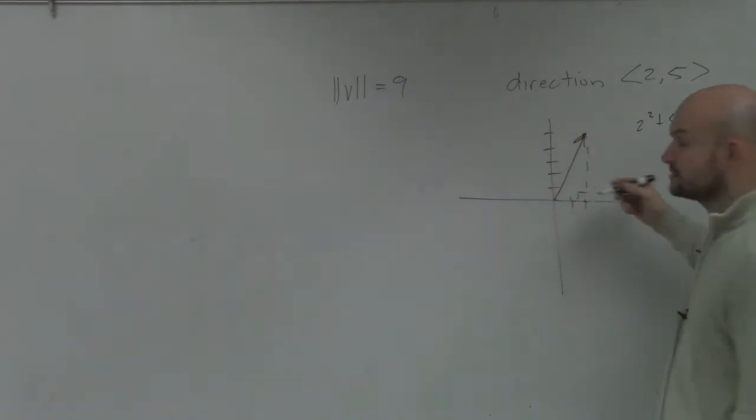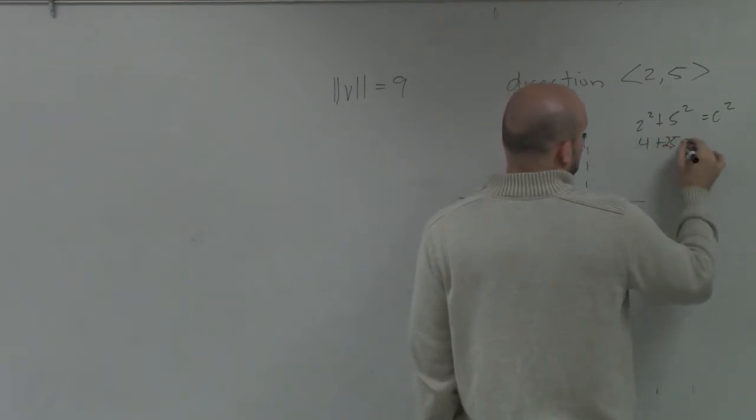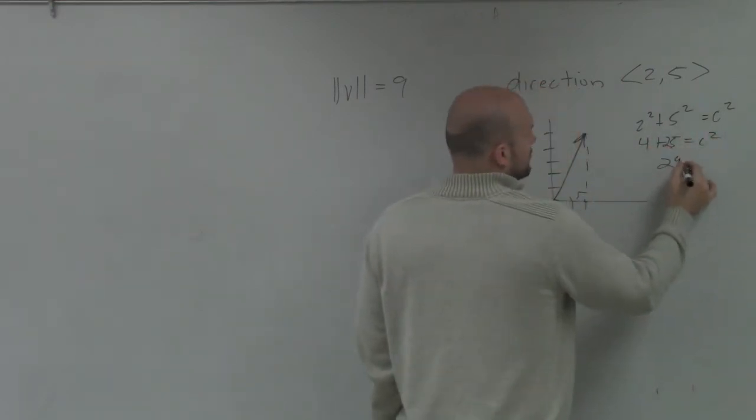And that's what we're trying to find is that magnitude. So therefore, you could say that's going to be 4 plus 25 equals c squared. 29 equals c squared.